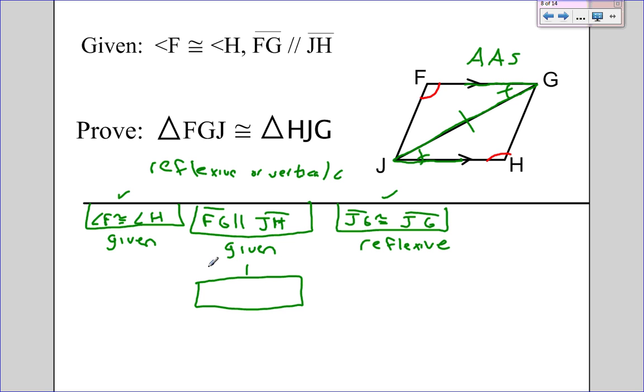We establish that that would be angle FGJ is congruent to angle HJG. And that was the second reason on the first page: if parallel, then alternate interior angles are congruent.